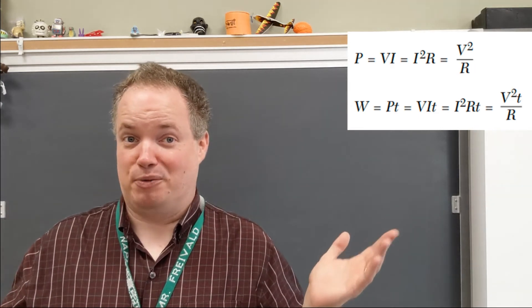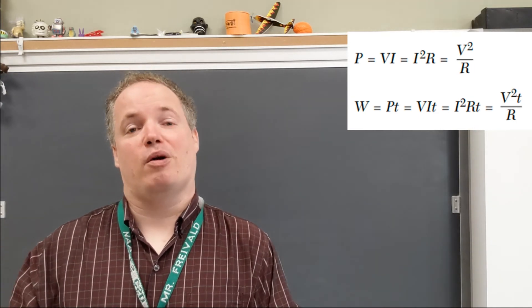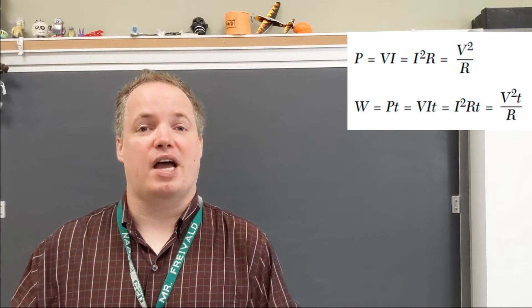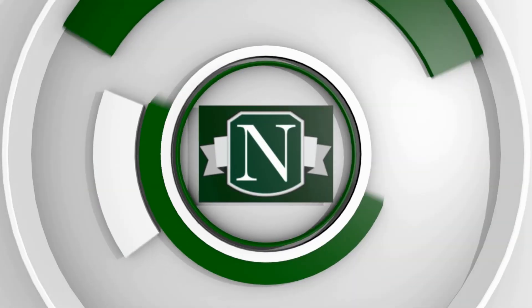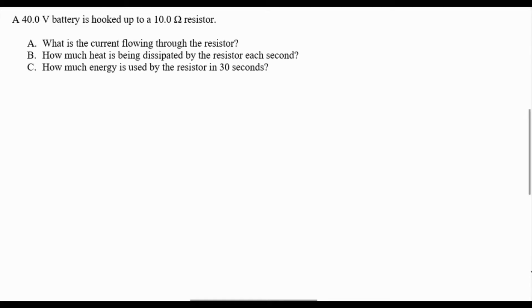But anyway, electrical power - effort times flow, voltage times current. Here's an example: a 40-volt battery is hooked up to a 10-ohm resistor. Let's calculate A) what is the current flowing through the resistor, B) how much heat is being dissipated by the resistor each second, and C) how much energy is used by the resistor in 30 seconds. Question A is just Ohm's law: I equals V over R, 40 volts over 10 ohms is 4 amps.